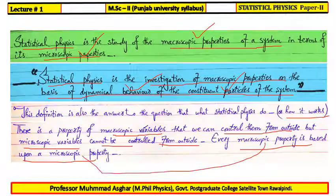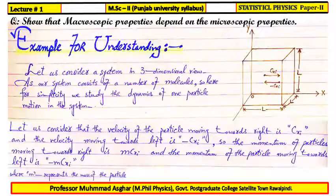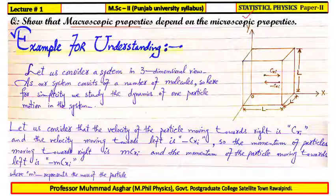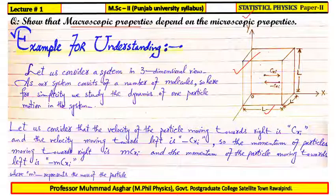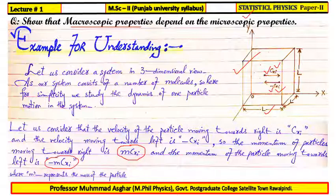It can be shown that macroscopic properties depend upon microscopic properties by considering a gas in a cubic container of dimension L, containing a large number of atoms and molecules. We focus on the motion of one molecule moving along the positive x-axis with velocity C_xi. After reflection from the face, this velocity becomes −C_xi, where the negative sign shows the opposite direction. We can find the change in momentum from these velocities: initial momentum before collision is mC_xi and final momentum after collision is −mC_xi, where m is the mass of the molecule.